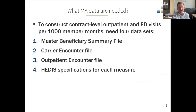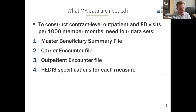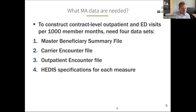From the Medicare data side, we used four datasets. The first was the Master Beneficiary Summary File for Medicare Advantage enrollment information and contract information for each enrollee. We used the carrier and outpatient encounter files to identify outpatient visits and emergency department visits. We also used the HEDIS specifications for each measure to essentially reconstruct the HEDIS measures using the encounter data. The HEDIS specifications require a data agreement with NCQA to use.